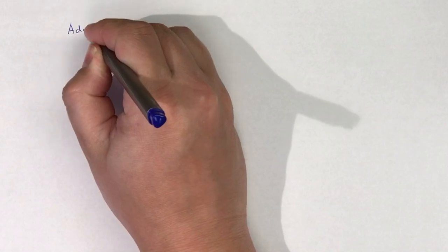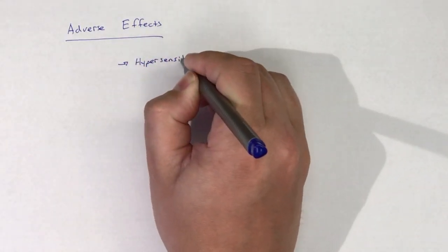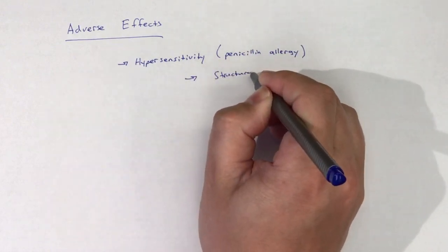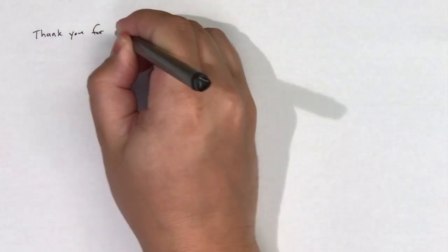The adverse effects of penicillinase-resistant penicillins is very similar to those of other penicillins, including Penicillin-G. Hypersensitivity to the beta-lactam ring remains an issue with penicillinase-resistant penicillins. This concludes the video.